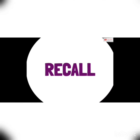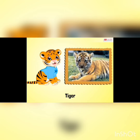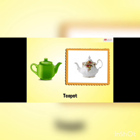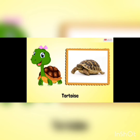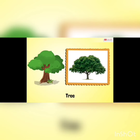Now let's recall the words that begin with letter T: Tiger, Tent, Teapot, Table, Tortoise, Tea, Tree.